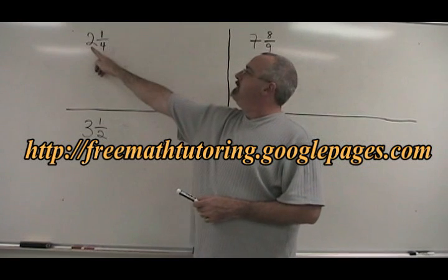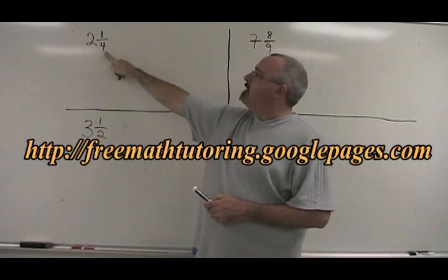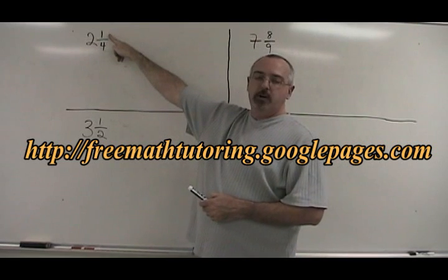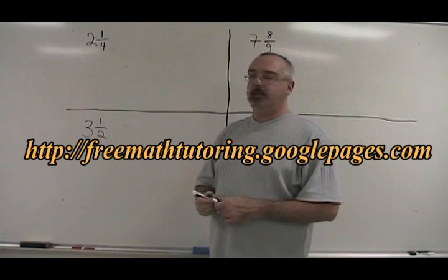The rule is, you multiply the big number by the denominator, and you add the answer to the numerator. That gives you the new numerator, while the denominator stays the same.